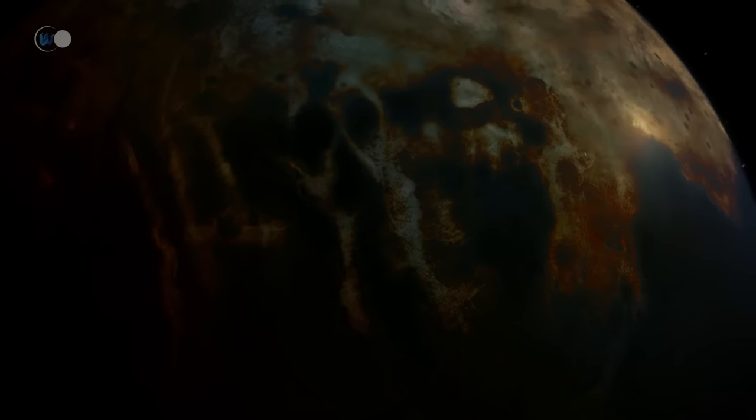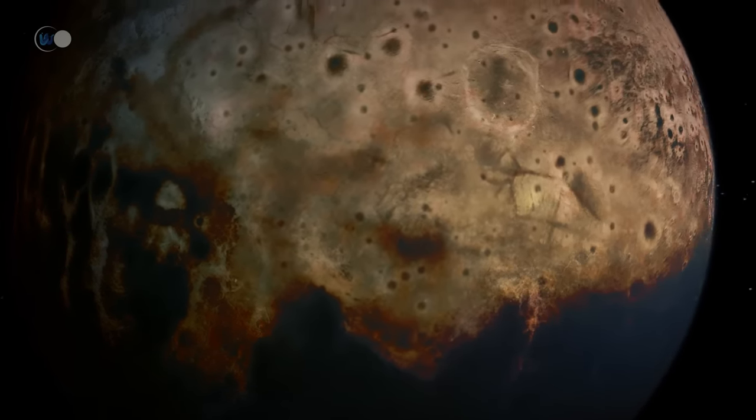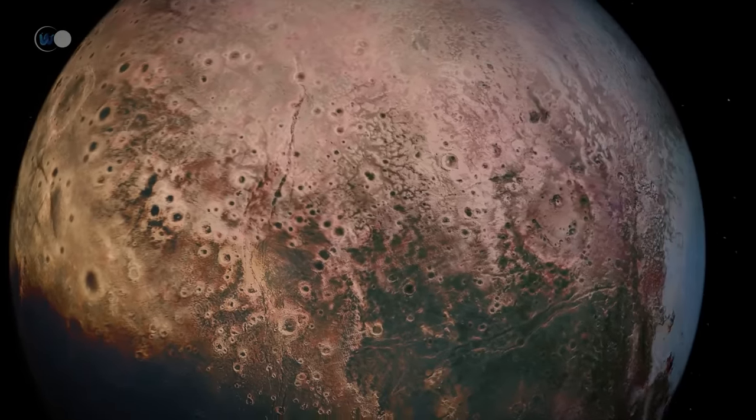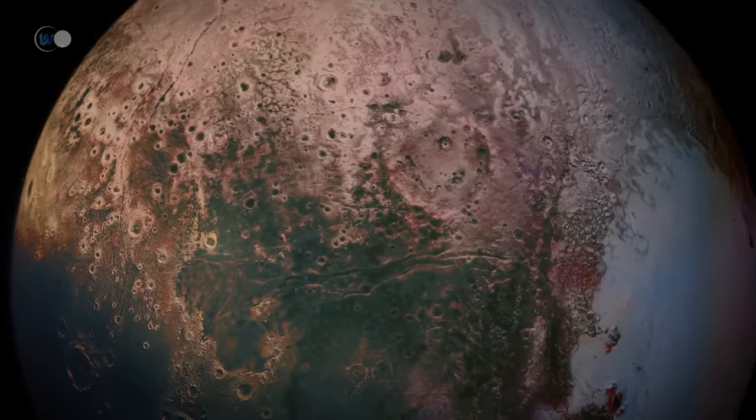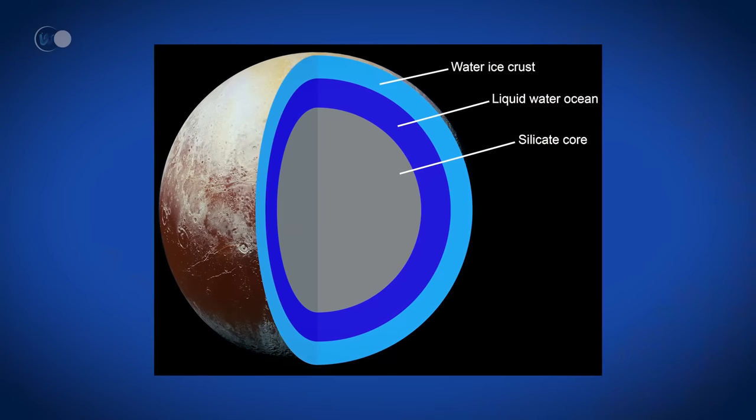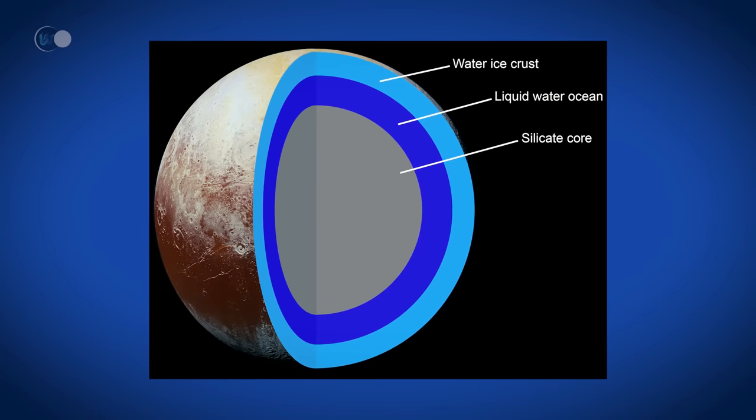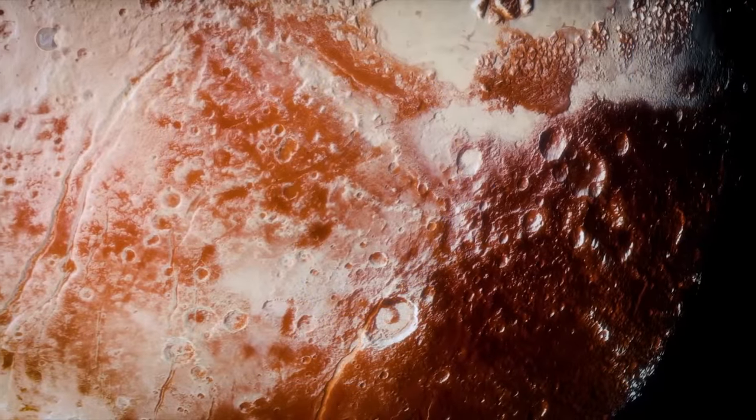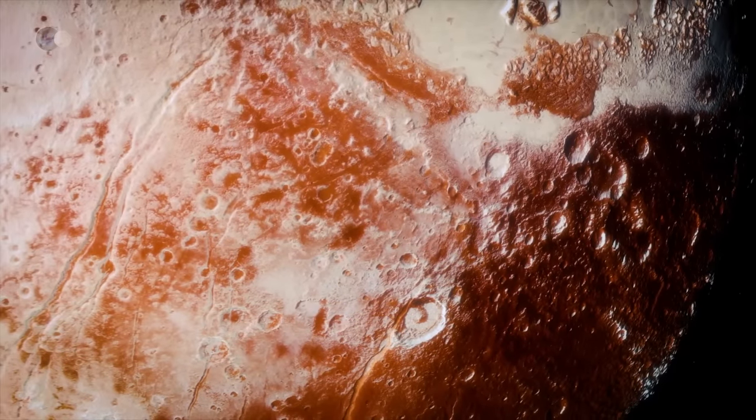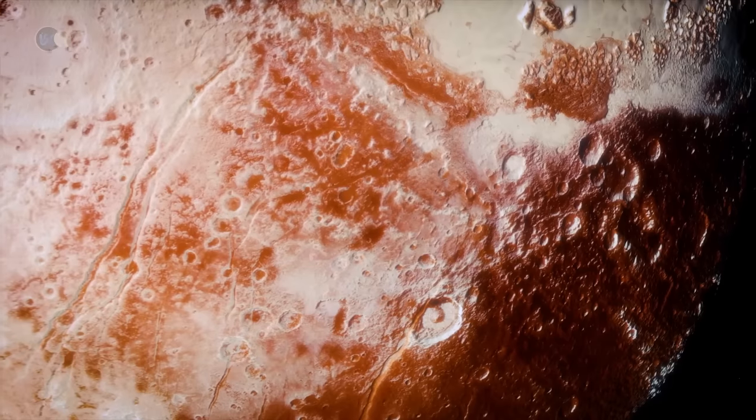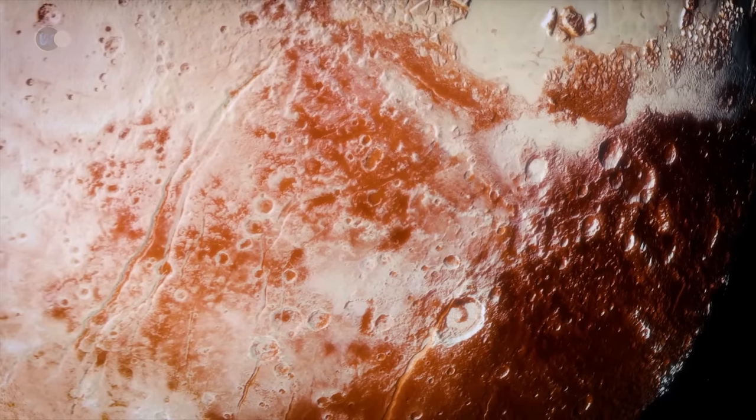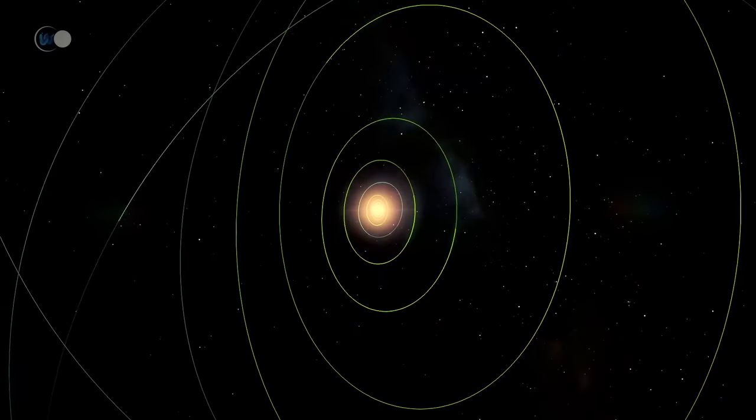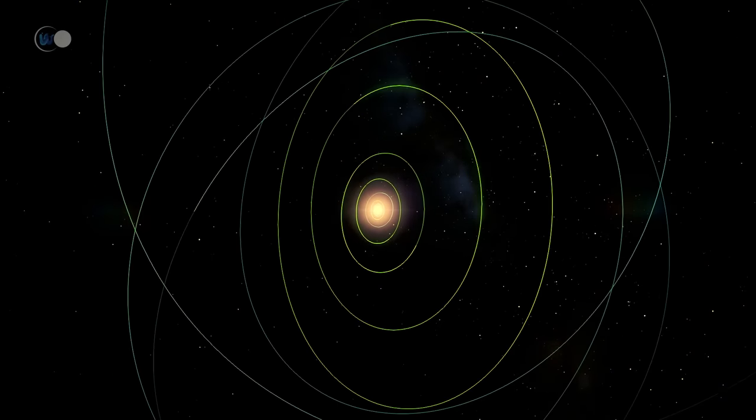With its 2,300 kilometers or 1,430 miles in diameter, Pluto is smaller than the moon and yet the largest and second most massive dwarf planet. Its essentially rocky core occupies the majority of the planet's volume. Its surface consists of plains and mountains covered with a thick layer of ice, probably water, mixed with traces of methane, nitrogen and carbon monoxide. It takes almost 250 years for Pluto to go around the sun.